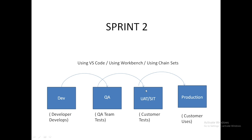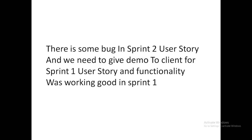Now, if there is some bug in Sprint 2 and you need to give a demo to the client for Sprint 1, suppose a particular functionality was working fine in Sprint 1 but in Sprint 2, as soon as you moved the code, that functionality stopped working. Someone might think: just pull the Sprint 1 code and push it back — simply revert the code. But how will you find out which components were deployed in Sprint 1?